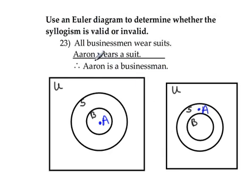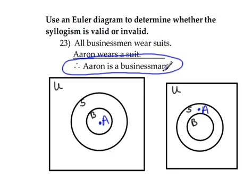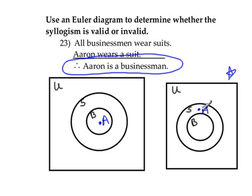Our conclusion says, therefore, Aaron is a businessman. Now, in one drawing it does show that Aaron would be a businessman — both premises are true in that case. But notice that in the other drawing, Aaron does not necessarily have to be a businessman. So it's an invalid argument.